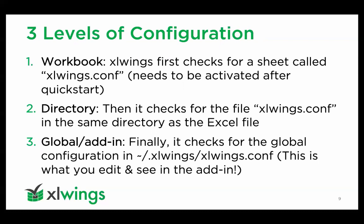Before we move to the live demo, I want to introduce the three levels of configuration available in xlwings. First, we have the workbook level — an xlwings.conf sheet where we can define which interpreter to use, what the Python path is, and so on. Then we have the option of an xlwings.conf text file in the same directory as the Excel file. And finally, we can fall back to a global configuration in your user directory under the .xlwings folder — which is really what the ribbon add-in edits.